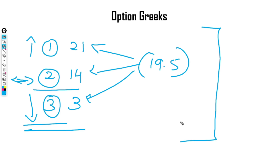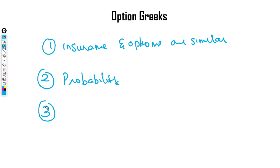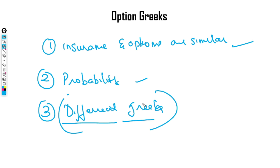We are definitely going to cover more in the next video on option Greeks, which will be a little more advanced. This was a very basic video on option Greeks. To summarize what we learned today: how insurance and options are similar, how everything is dependent on probability, and the different Greeks — Delta, Theta, Vega, and Gamma. Hope you guys liked this video. Thank you so much for joining and hope to see you soon.